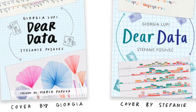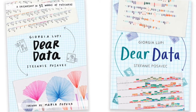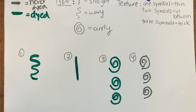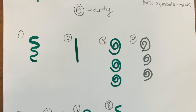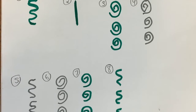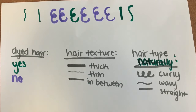Based on the book Dear Data, we also had youth make creative representations of data they collected themselves, such as these of girls' hair in one data club. The images reflect texture, curliness, and whether their hair was dyed.